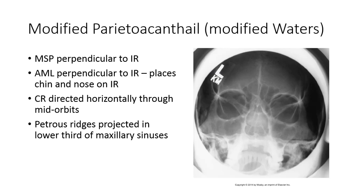For the modified waters view of the orbits, this view is not always performed, but will effectively evaluate the inferior orbital ridge better than the other views. Start by placing the MSP and the acanthiomeatal line perpendicular to the IR. The AML is typically perpendicular when the nose and chin are resting on the IR. Direct the central ray through mid-orbits. You can collimate to the orbits for this view, as the petrous ridges will be projected in the lower third of the maxillary sinuses.